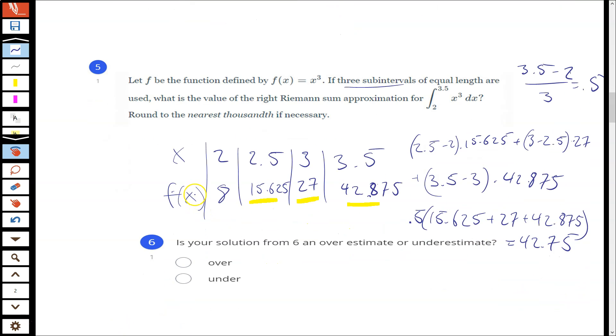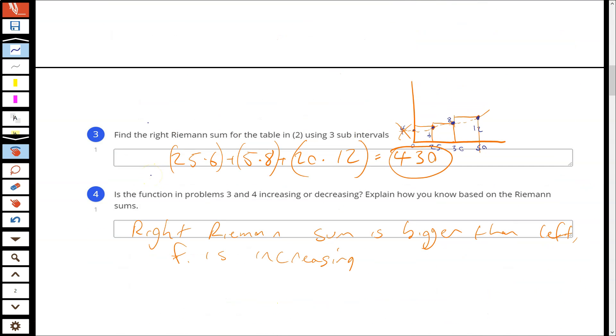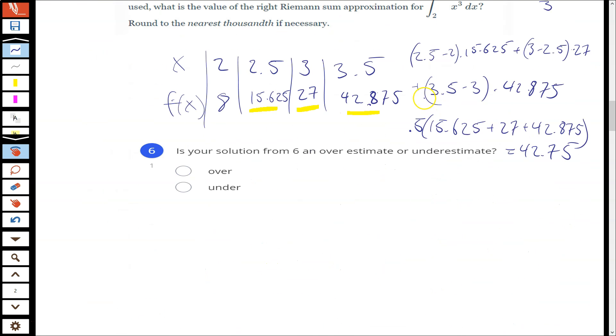And is my solution an overestimate or an underestimate? Well, we use a right Riemann sum and the function is increasing. There's a couple ways you can go about this. You can memorize it or you can think about it graphically. My right Riemann sum, when the function is increasing, we can look at our graph that we sketched in the last one, it's an overestimate. So this is an overestimate.